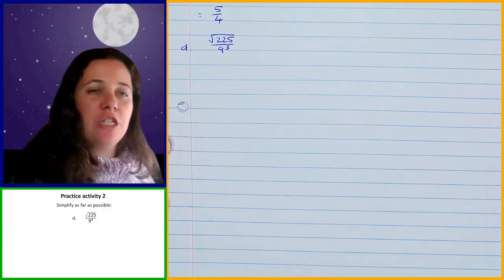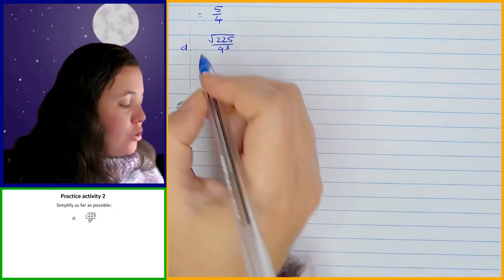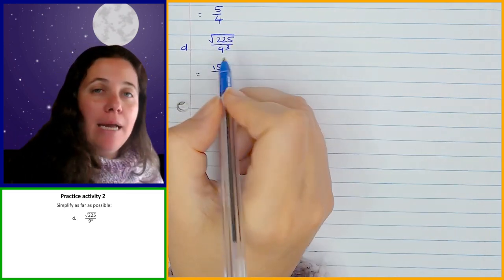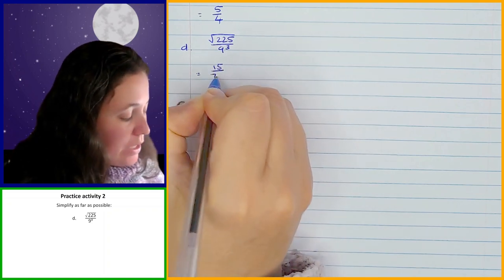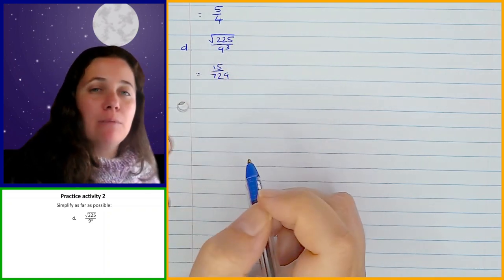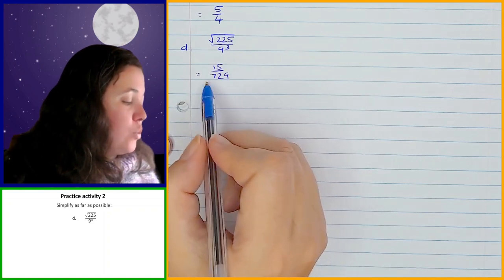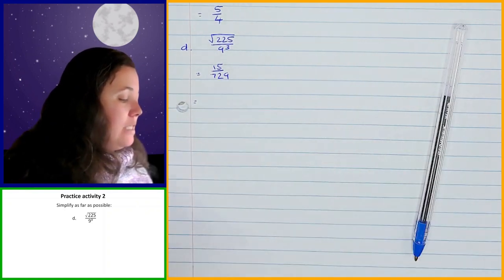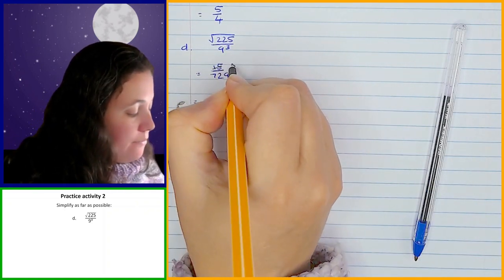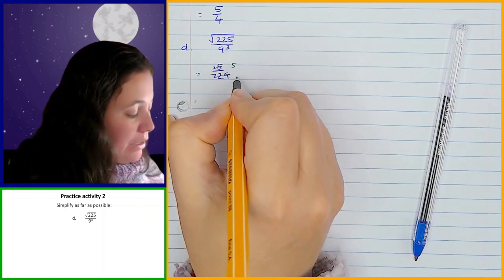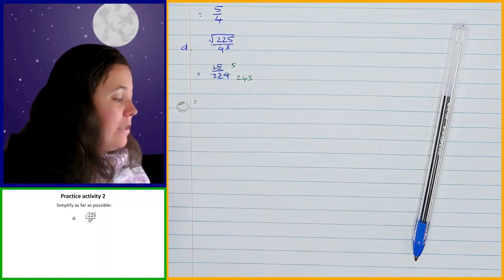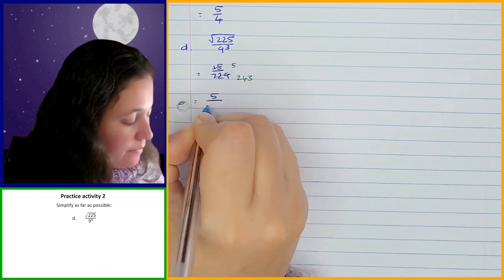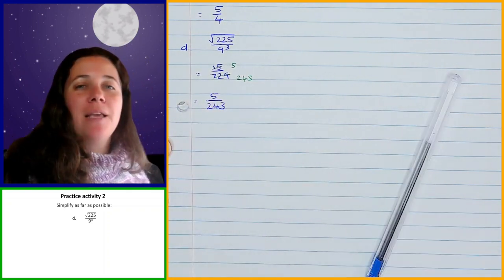So let's go through this last question. The square root of 225 is 15, over 9 cubed is 729. Now this fraction can be simplified further — if I divide 729 and 15 both by 3: 15 divided by 3 is 5 and 729 divided by 3 is 243. So that should have given you 5 over 243 for question D.